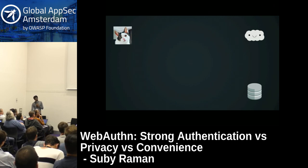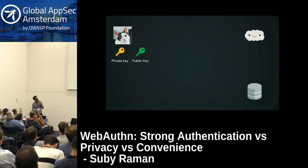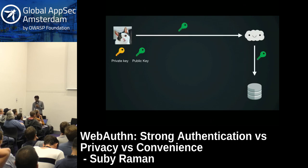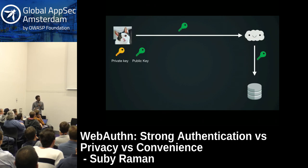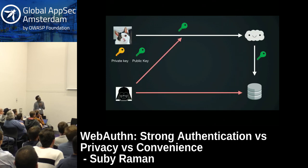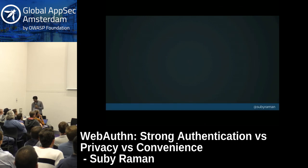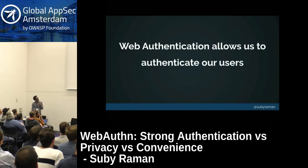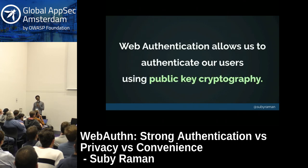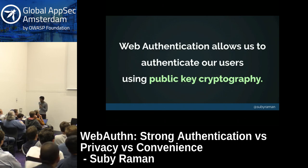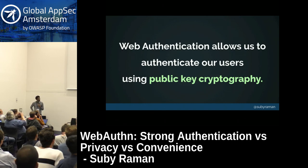What if there were two keys that could be used to identify and authenticate me? One key remains with the user in private; the other can be shared publicly with anyone — sent to the server, persisted in the database, shared openly. The combination of the two keys is what is used to authenticate the user, so there is no shared secret. If the hacker steals the public key, the hacker cannot do anything with it. This is the promise of public key cryptography, and this is the promise of WebAuthn — it allows relying parties and application developers to authenticate their users using public key cryptography, available in a browser API across all major browsers.